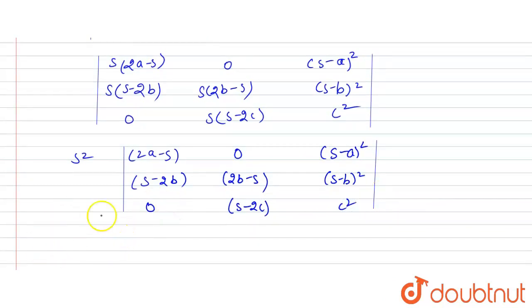we will get: 2s squared times s minus a times s minus b times s minus c. By expanding this, okay.